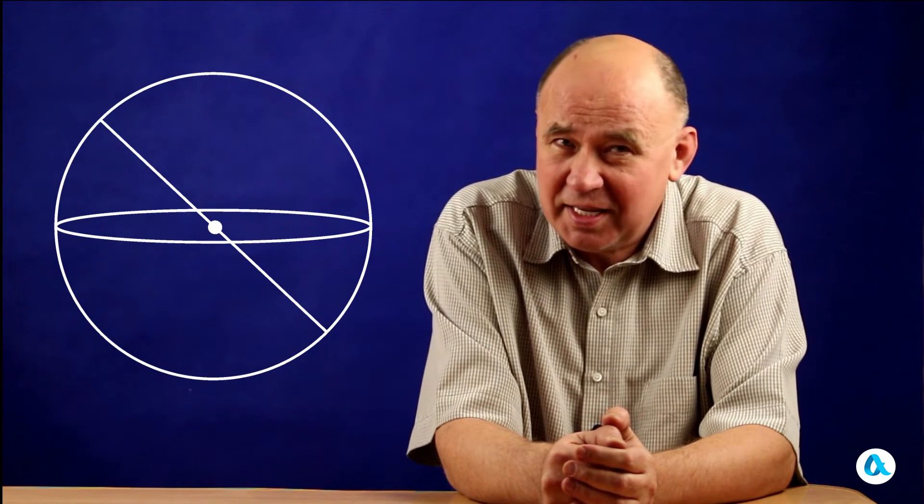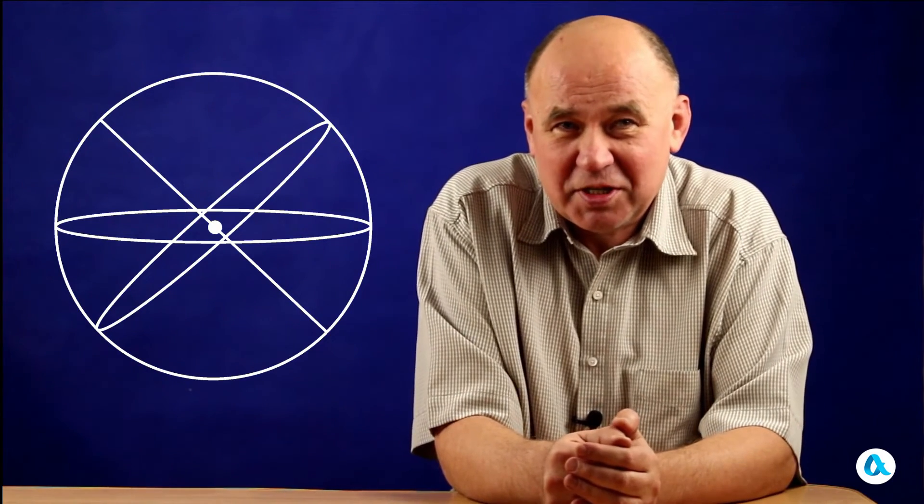Its northern end points towards the pole star, serving as a guiding reference in the night sky. This circular shape is positioned at a 90 degree angle in relation to the axis of the Earth. This is the celestial equator. It is an imaginary circle that divides the celestial sphere into the northern and southern hemispheres, creating distinct regions in the sky.